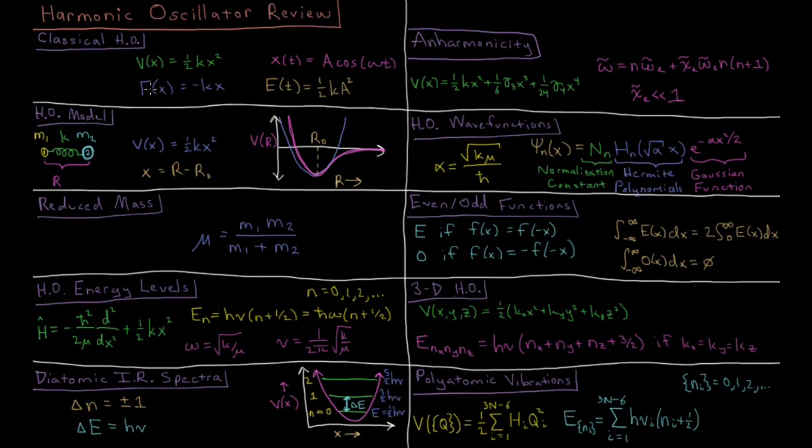The force you get from this is the minus derivative with respect to x, which is minus kx. If you solve for the trajectory over time for a particle which obeys this potential, you'll get that trajectory over time is some amplitude A times cosine times some angular frequency times time.